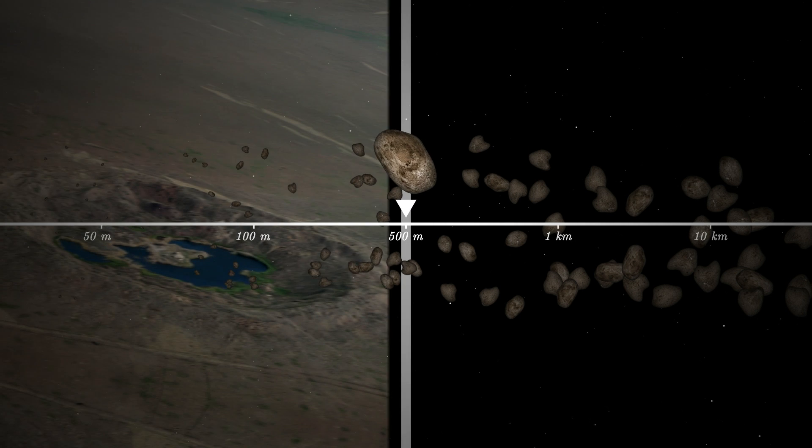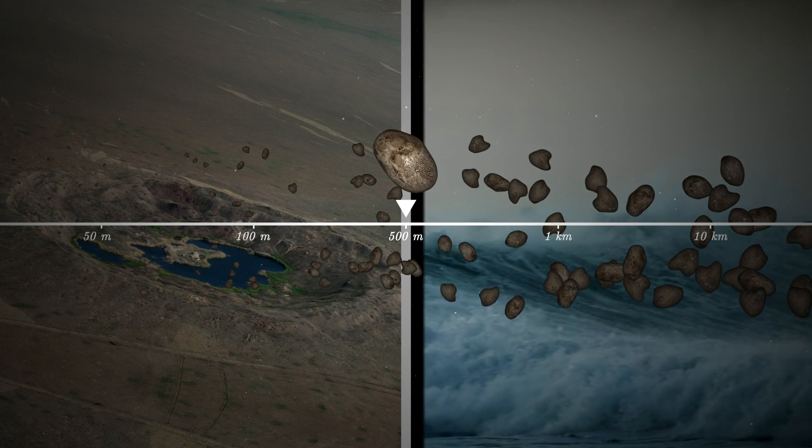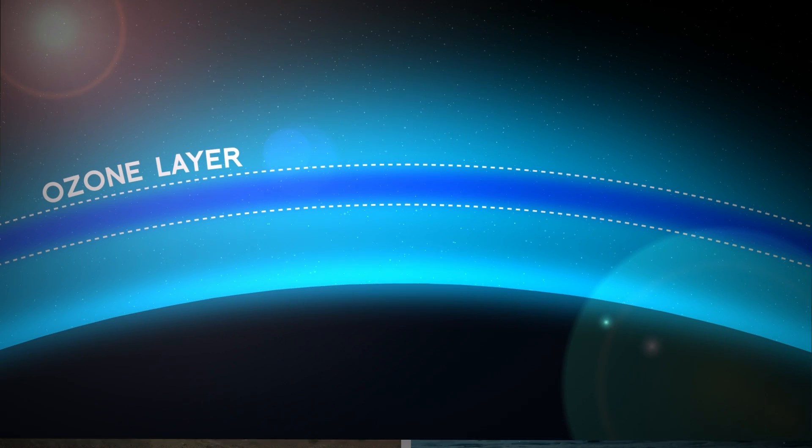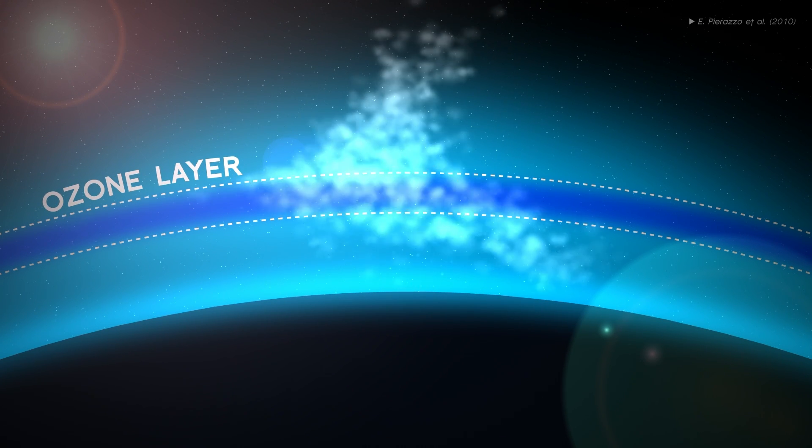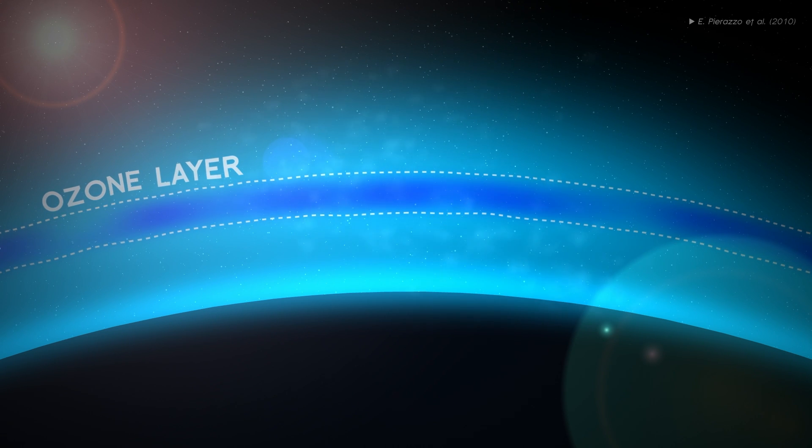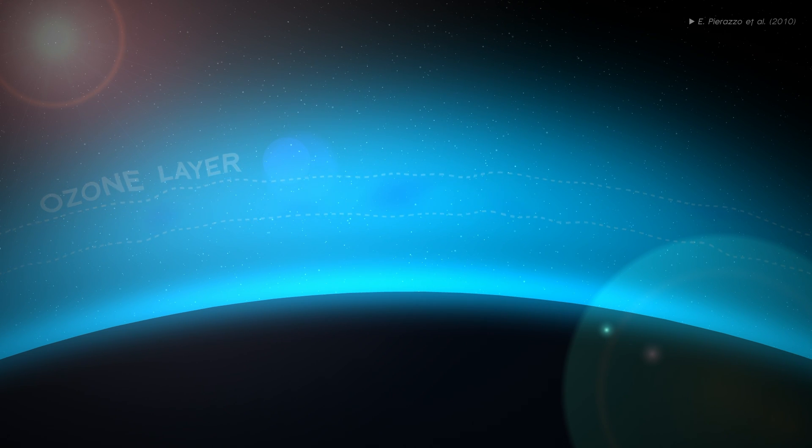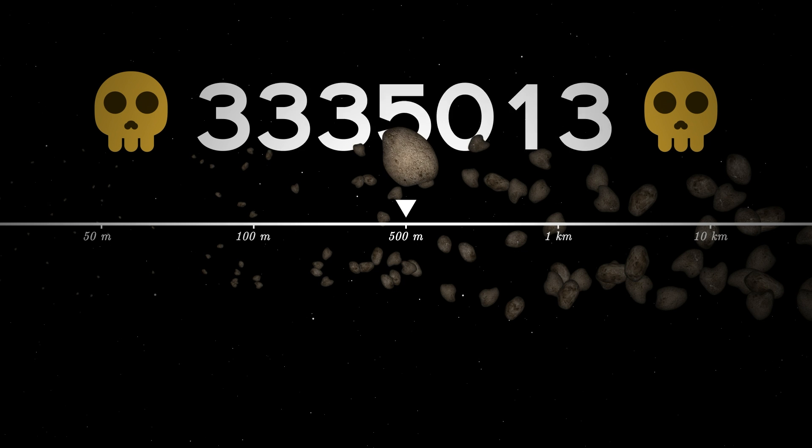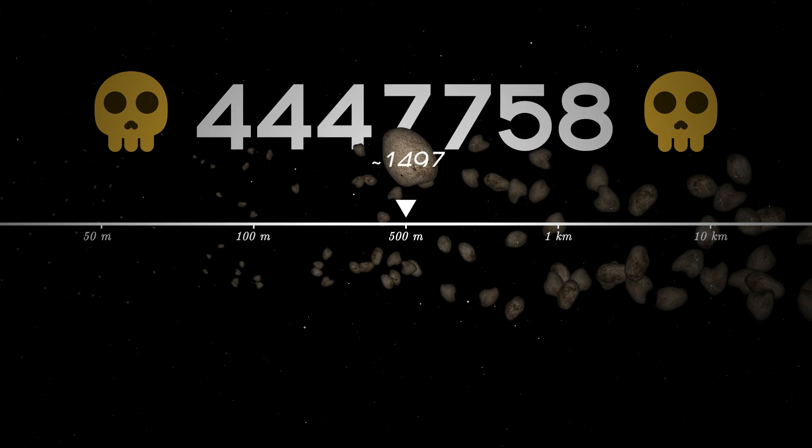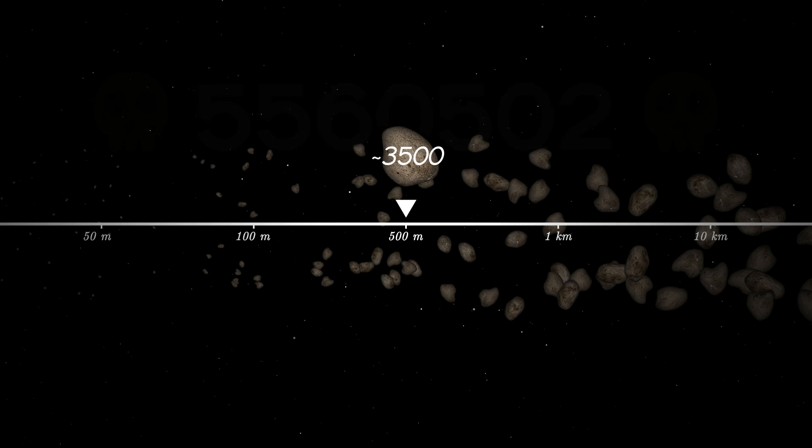The 500-meter rocks aren't far behind. On land, they produce craters several kilometers wide, and in the ocean, tsunamis. It's also been theorized that they could send enough water into the atmosphere to trigger a cascade of chemical reactions that would end up depleting the entire ozone layer. In short, an international crisis that could end millions of lives. Estimates indicate there are about 3,500 of these.